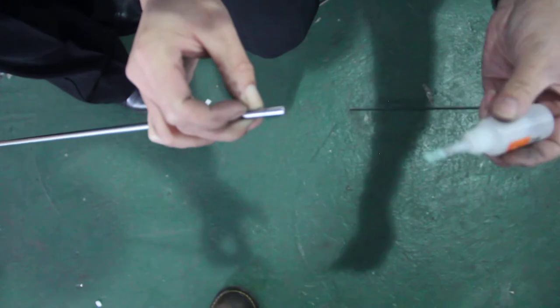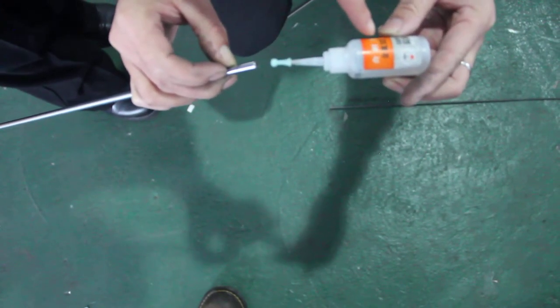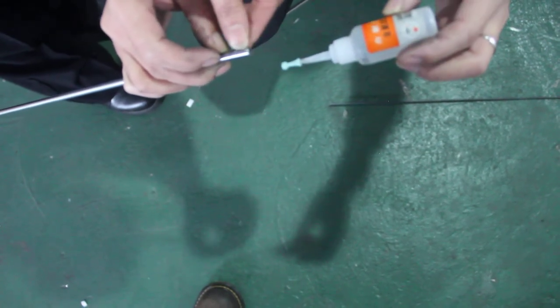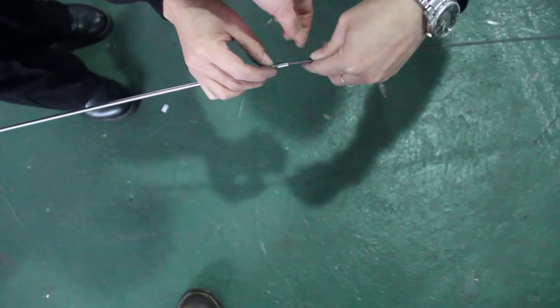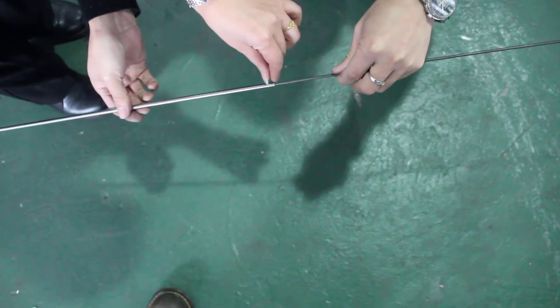So you put glue - this is 502 glue, special glue. You put glue into this hole. Then this small one to pull into this hole for the end connection.